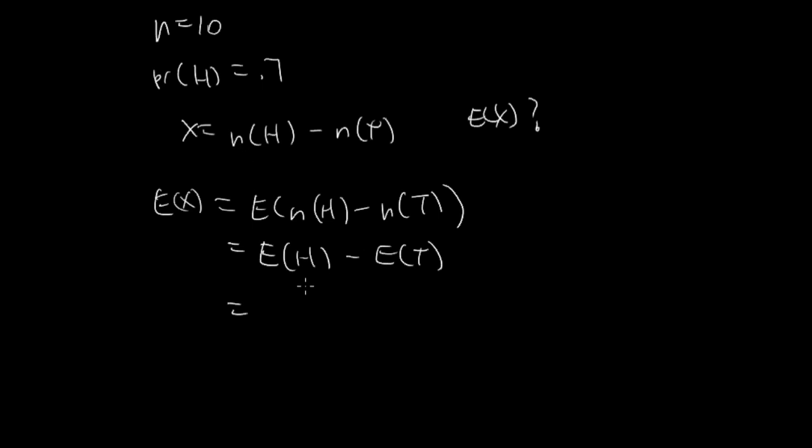So expected value, expected number of heads is the number of trials times the probability of head, which is 0.7. And the expected number of tails, the number of trials times the probability of tail. And that is going to be 0.3.